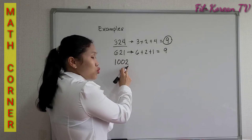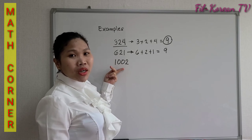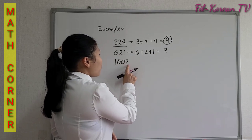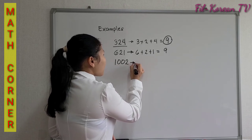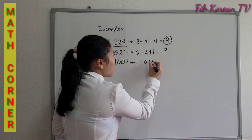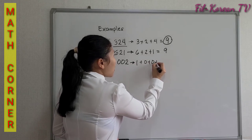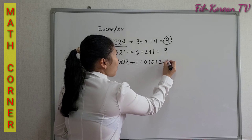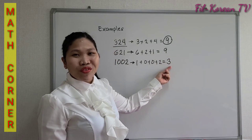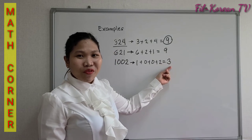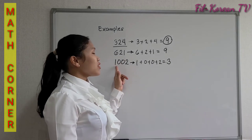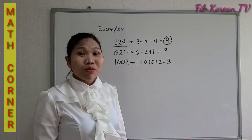1002. This number has 4 digits. We will just add: 1 plus 0 plus 0 plus 2 equals 3. The answer is 3, so 1002 is divisible by 3.